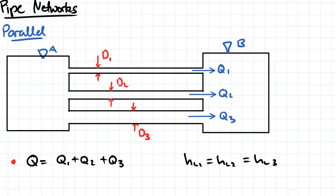The next mechanism we can have is when we have pipes in parallel. In this case, the flow rate is going to be split between each of these three pipes, so the total flow rate between A and B is going to be equal to the summation of all the individual flow rates.